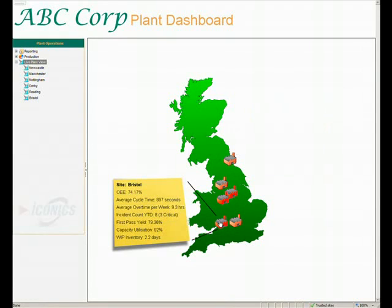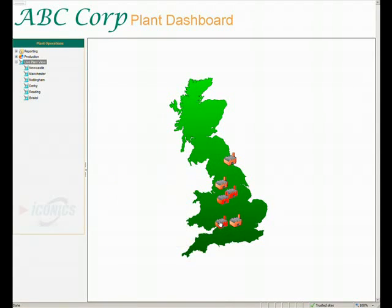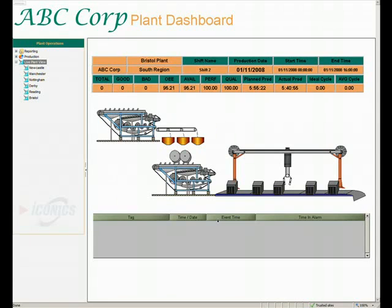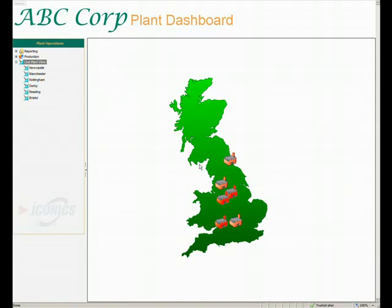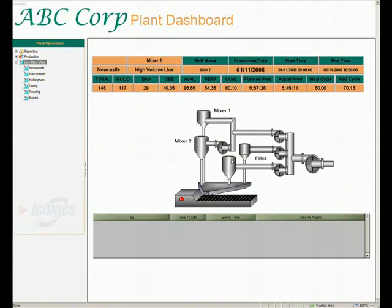As you can see, the Bristol plant is giving us an alert, and by clicking on the factory, we can then drill down into the site to obtain more information, which you can now see up on the display. This form of navigation allows you to identify problem areas in real-time, and is one of the key tenants of continuous improvement initiatives, such as OEE.